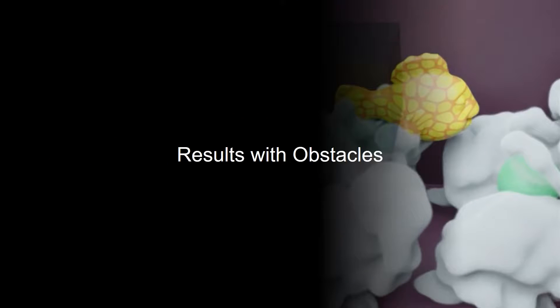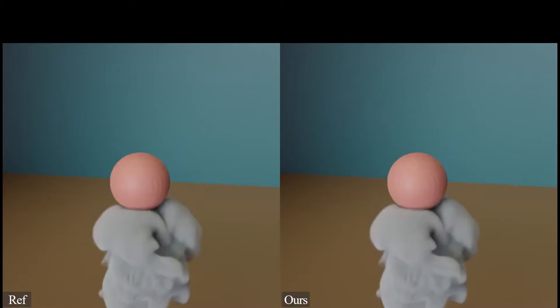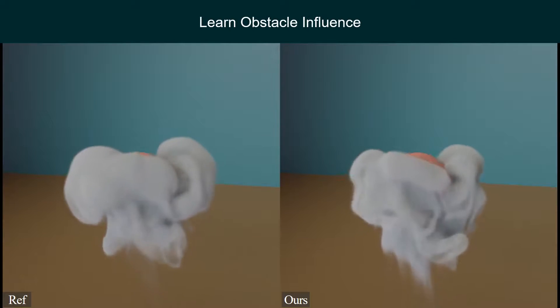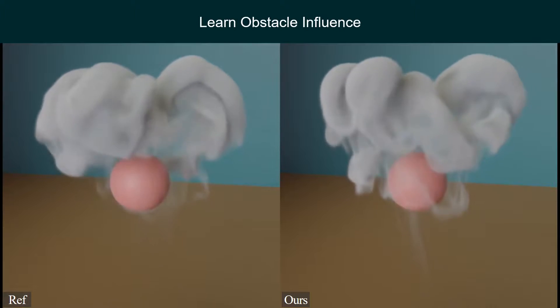Here we show results with obstacles. Conditioned on a mask of obstacle regions, our network learns its influence on the velocity results.